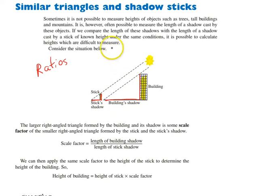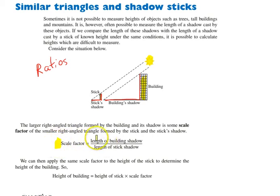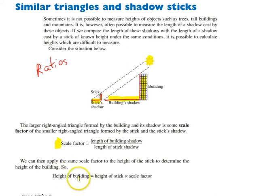Let's look at the formulas you're going to need — two formulas. Step one is to find out what the scale factor is. Scale factor is equal to the length of the building's shadow divided by the length of the stick's shadow. Step two is finding the height of the building by taking the height of the stick and multiplying it by the scale factor found in step one.